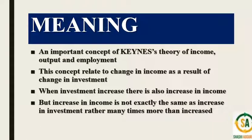Before understanding the working of the multiplier, we will understand the meaning of multiplier. It is an important concept of Keynes' theory of income, output, and employment. It relates to the change in income as a result of change in investment. When we make some initial investment, there is an increase in income, and that increase is many times more than the investment. This increase in income depends upon the marginal propensity to consume.